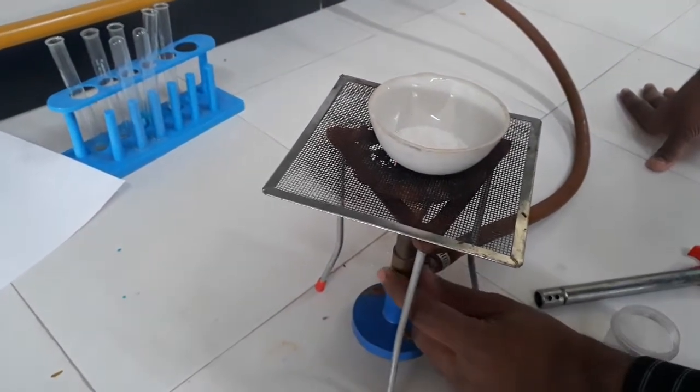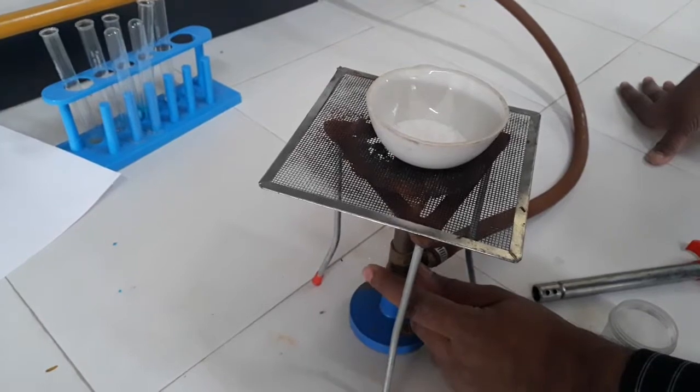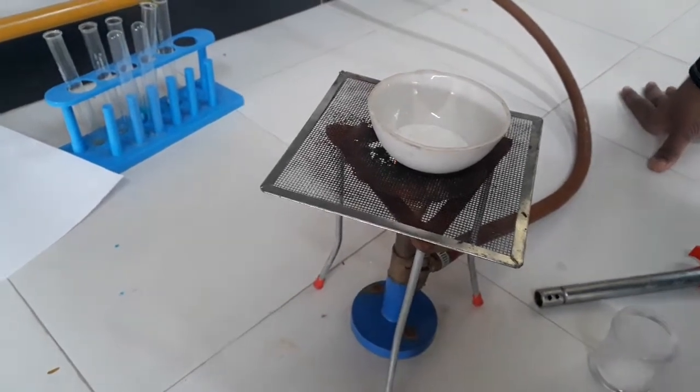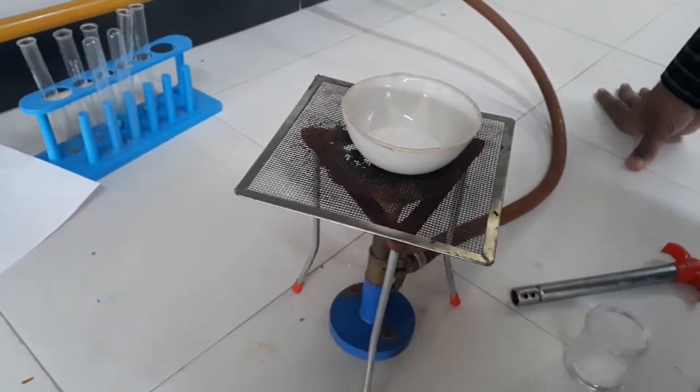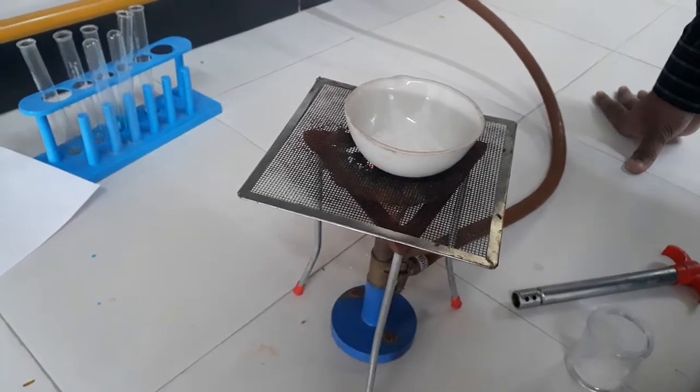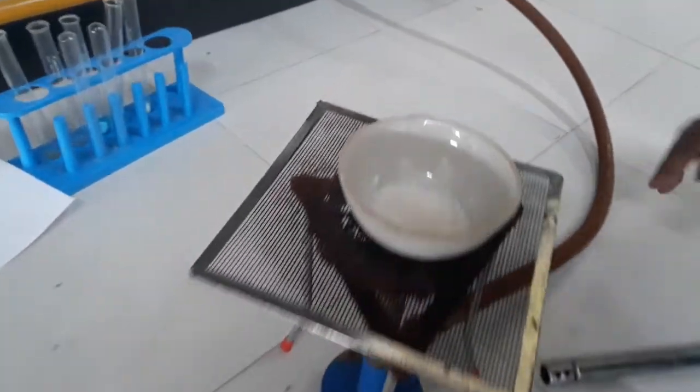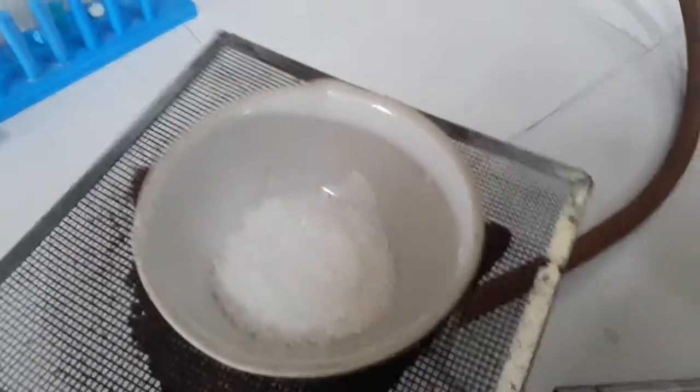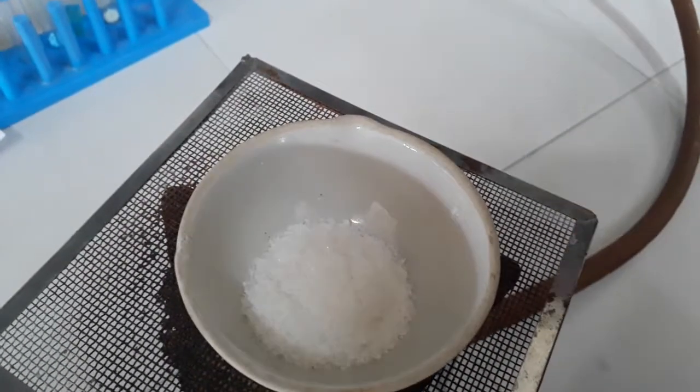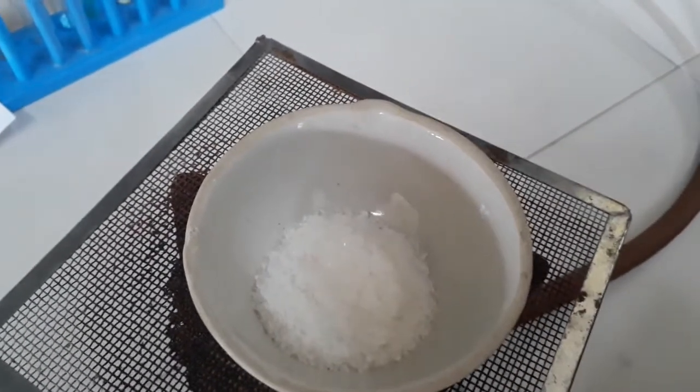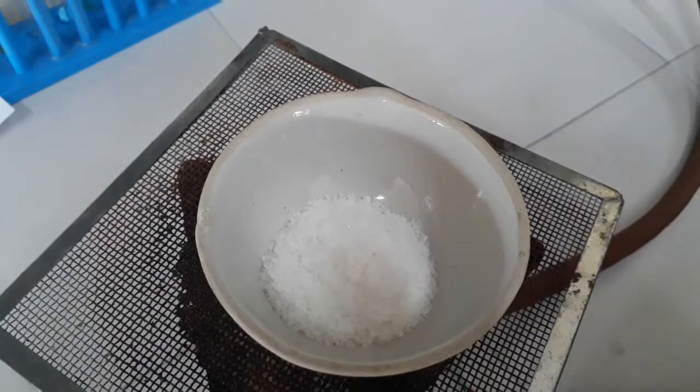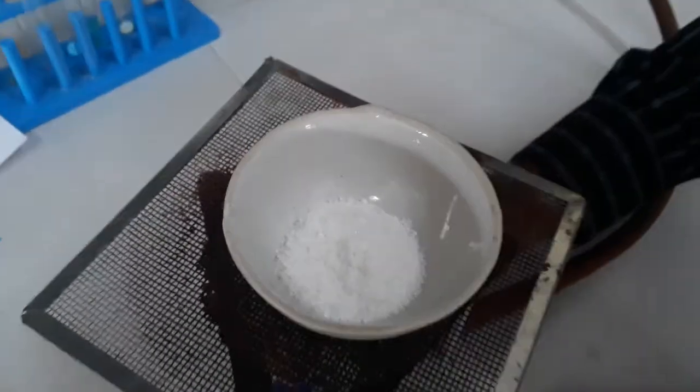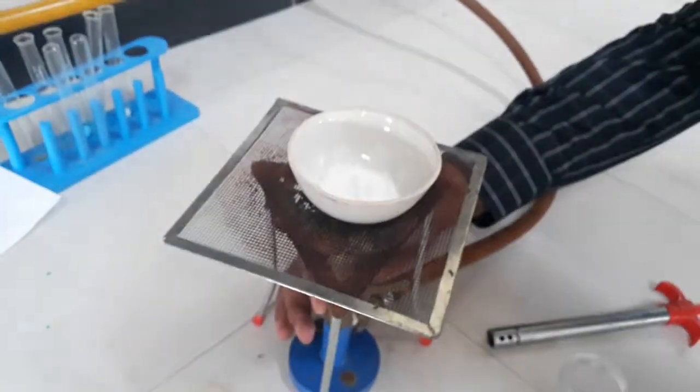Now you can see the color of the substance, or you can see some shiny color on top of it. This is due to melting of alum, and when it is getting more and more heat, more and more water molecules will be released.